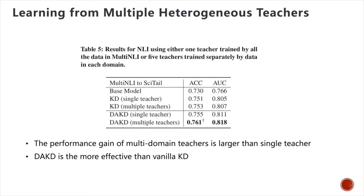To get deeper insights on learning from heterogeneous teachers, we conduct experiments to compare the effectiveness of a single teacher trained using all five domain data in multi-NRI versus five teachers trained separately by each domain data, denoted as single teacher and multi-teacher respectively. As shown in this table, clearly both teacher settings boost the performance of the target domain, and the performance gain from multi-domain teachers for both KD and DA-KD is larger than the gain from a single teacher. DA-KD is more effective than KD when incorporating knowledge from multiple cross-domain teachers. We speculate that exposing the student model to a diverse set of teachers can be beneficial, similar to how model ensemble benefits from multiple heterogeneous models, but further studies may be required to better understand this phenomenon.